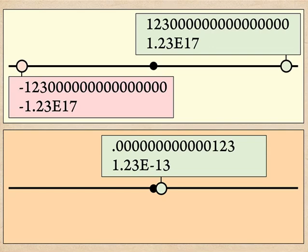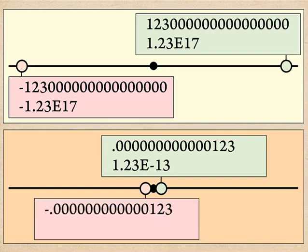If the number is a tiny tiny little negative number, like the same value but negative, well we just stick a minus sign in front of the same thing: -1.23E-13.